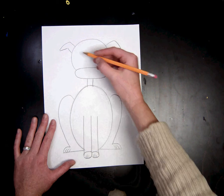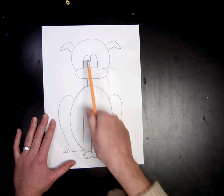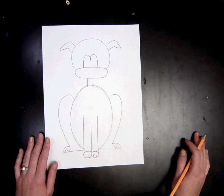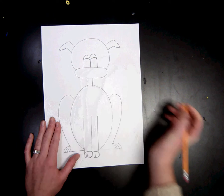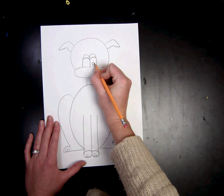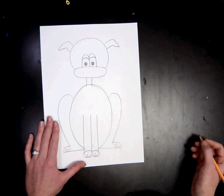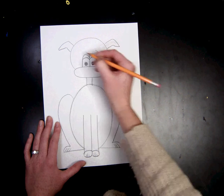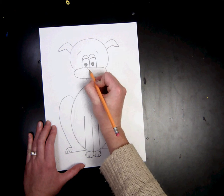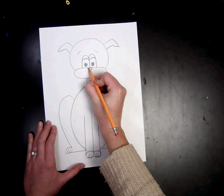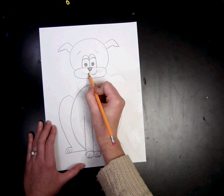I'm going to do kind of big eyes. This is a cartoon, not meant to be realistic. So two semi-circles and some eyelids. For the nose, a triangle. Mouth and the tongue.